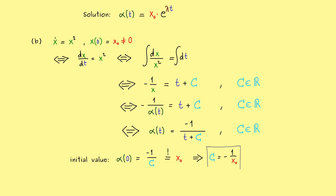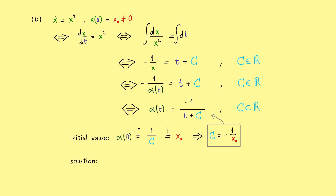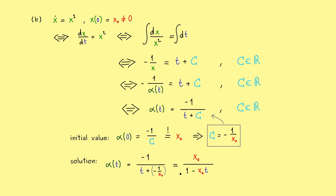We put c into our general form. The solution to the initial value problem is alpha of t equals minus 1 divided by t plus minus 1 over x0. Simplifying the fraction gives x0 divided by 1 minus x0 times t. With that we have seen some nice examples. In the next video let's go deeper into the theory again. I really hope to see you there — have a nice day, bye!